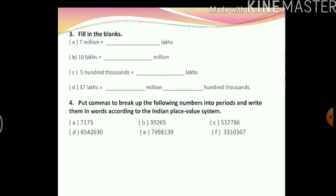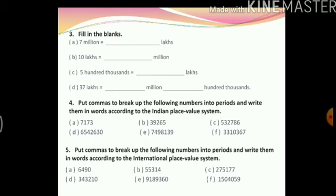Next we have another question: put commas to break up the following numbers into periods and write them in words according to the Indian place value system. We already discussed this — when breaking up numbers using commas in the Indian place value system, we place the first comma after 3 numbers and the second comma after 2 numbers. These are easy questions; I hope you have fun solving them.